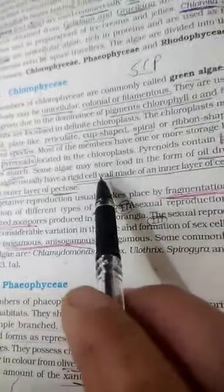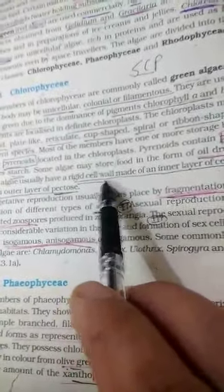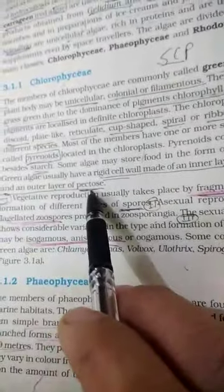Now it comes to the cell wall. The cell wall of the green algae is mainly made up of cellulose, but the outer layer is made up of pectose.